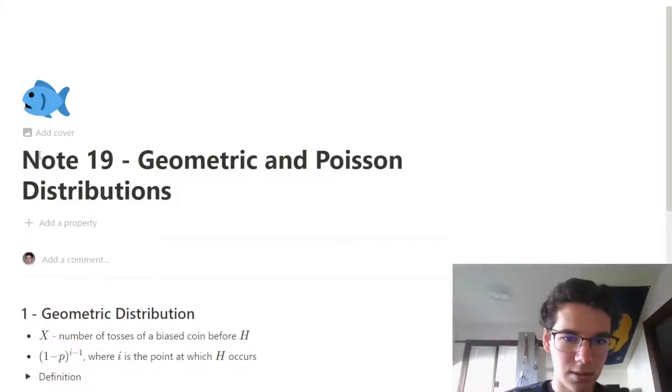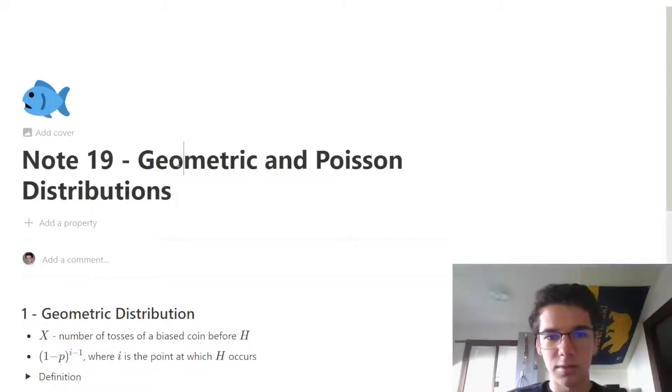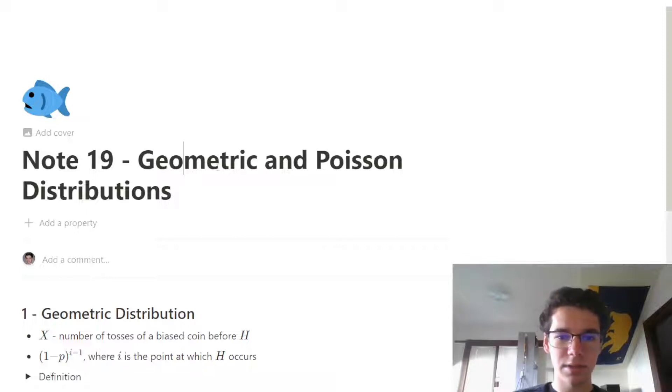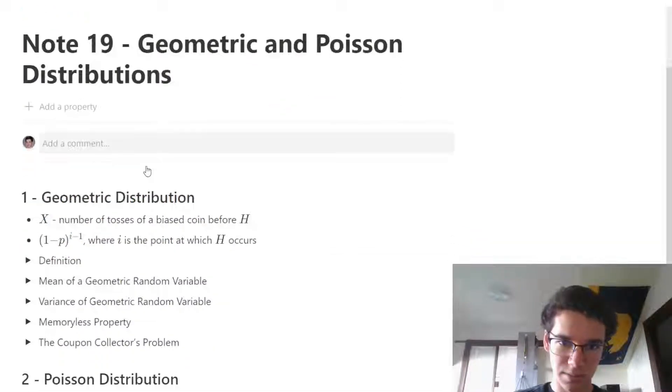Let's get on to note 19 from CS70. This one is about the geometric distribution and the Poisson distribution.